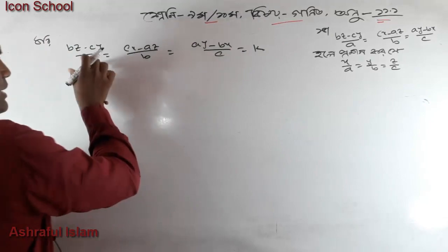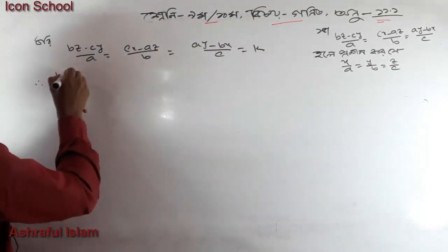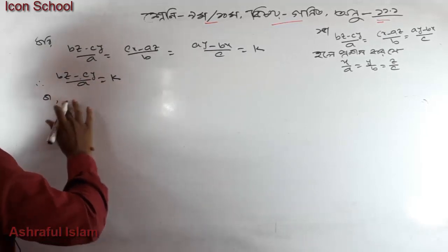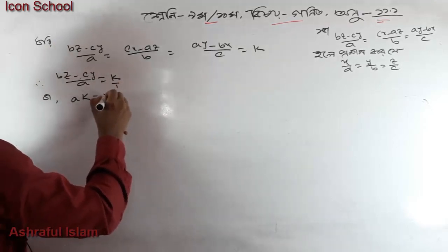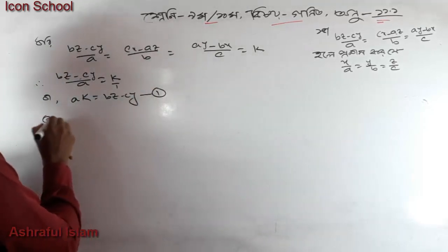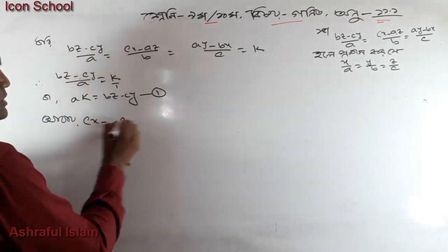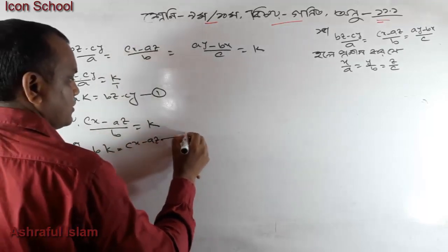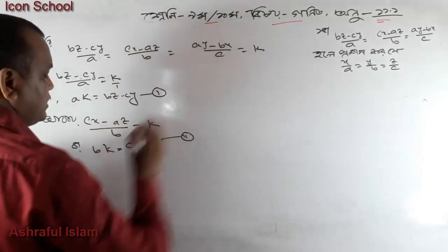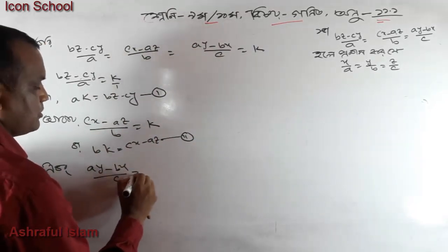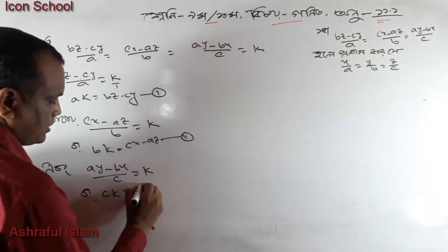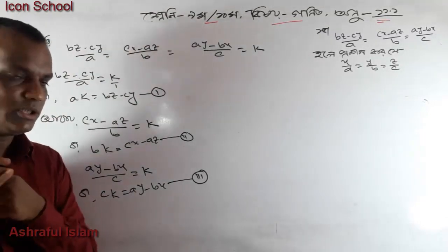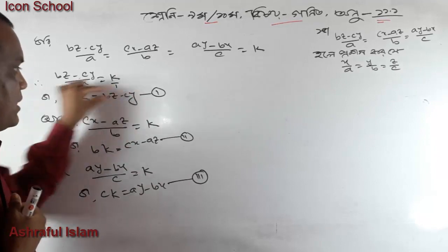This is the same. Now I will write a·x·k and a·x·k. Then bz minus cy by a·x·k — I will write this as a ratio. This is the same. I will write bz minus cy, a·x·k. Then cx minus az by b·x·k. This is the same: cx minus az. Then cy minus bx by c·x·k. This is the same: cy minus bx.